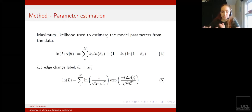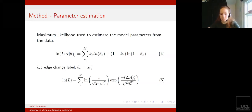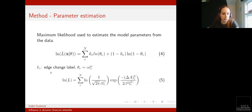Once we've got our model, we can use our data to estimate the values of parameters. We use a maximum likelihood approach where we maximize the log likelihood in equation four for the Bernoulli distribution and equation five, calculating the gradient with respect to the parameters and finding where this gradient is zero.